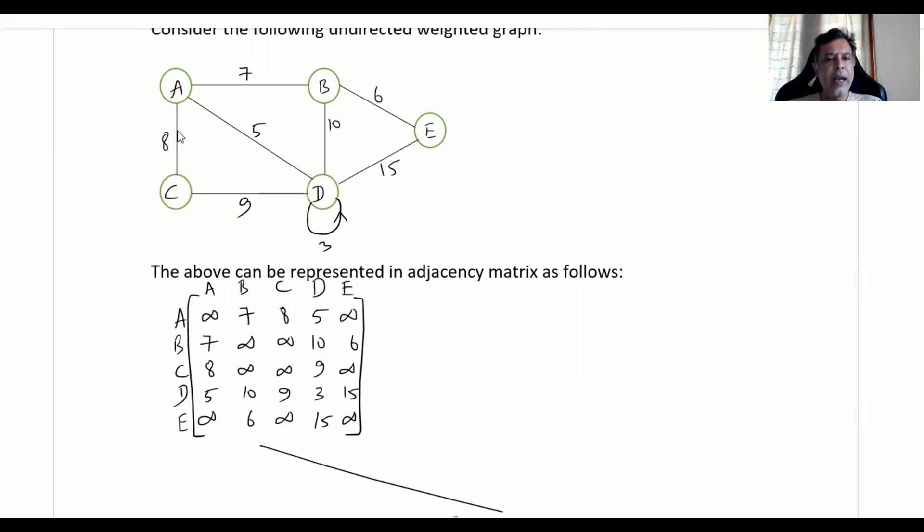So wherever there is no direct access, for example, A to E, there is no direct access. C to E, there is no direct access. You put infinity over there. A to E is infinity, C to E is also infinity. Likewise, when there are weights specified, we fill up with weights and wherever there is no direct access, then you specify infinity in that.